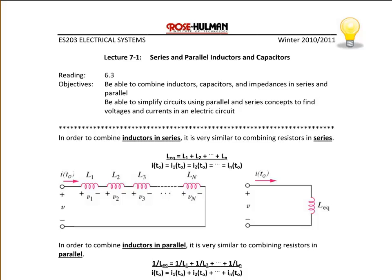In order to combine inductors in series, it is very similar to how we combine resistors in series. Inductors in series add, and inductors in parallel combine like resistors in parallel, where the equivalent inductance is equal to 1 over the sum of the reciprocal of the individual inductances. This figure here shows an example of that, where the voltages across the inductors combine based upon KVL.